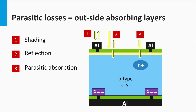A third optical loss mechanism is parasitic absorption losses in the non-active PV layers. In this example, the green top layer can be an anti-reflection coating or a passivation layer to reduce the number of defects at the surface of the emitter layer. If this layer absorbs photons, these photons will not contribute to charge carrier generation that will be collected at the contacts. This is what we address as parasitic absorption. In the design of solar cells, we preferentially would like to use materials for the non-active part of the solar cell that have high transmissions for the spectral part utilized by the solar cell.